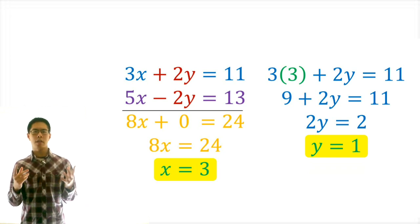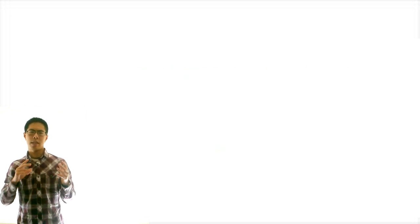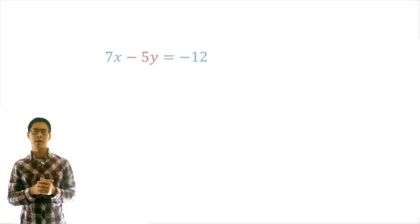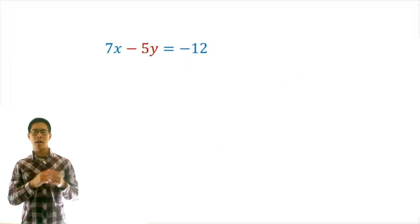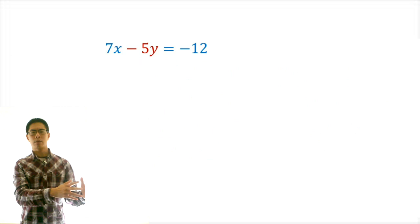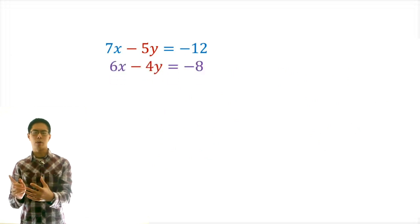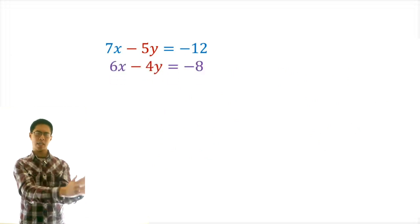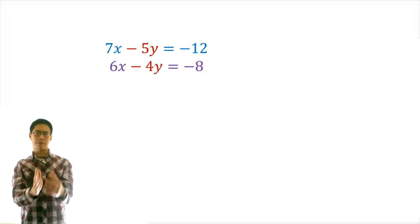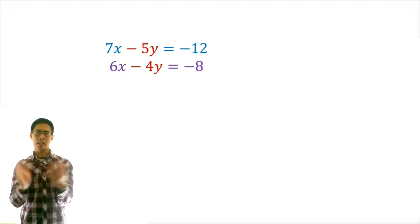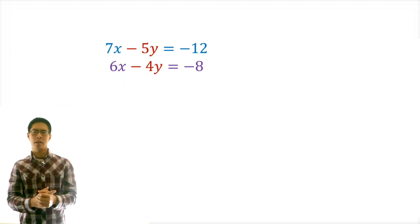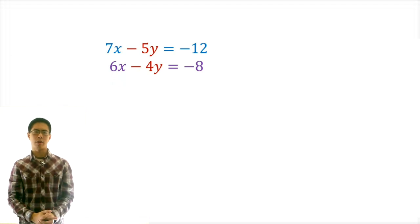Now let's try one that's a little more difficult. Let's say that our two equations this time are 7x minus 5y equals negative 12, and 6x minus 4y equals negative 8. Let's go through our five-step process.